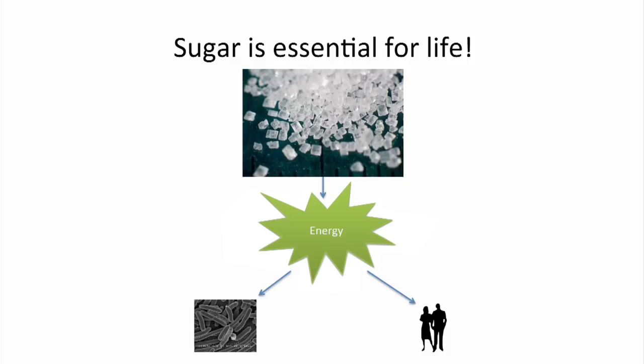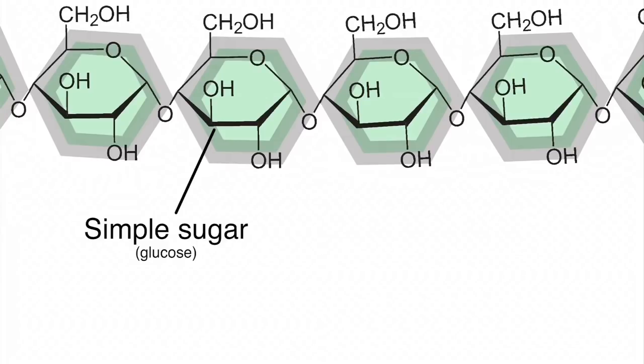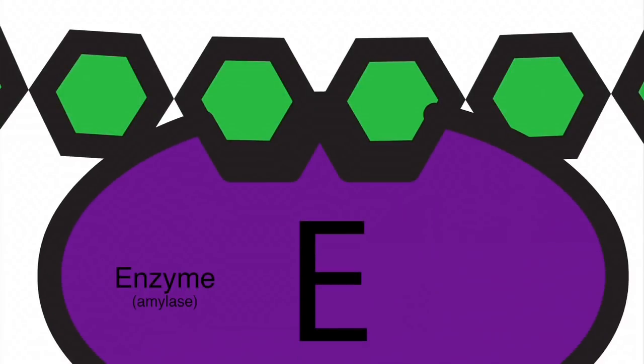Let's take a closer look at how this is done. The starch polymer is made of chains of simple sugar monomers called glucose. The bonds that connect them are called glycosidic bonds. An enzyme called amylase helps break the sugars apart from each other by fitting between two monomers. A water molecule is absorbed in order to break the glycosidic bond between two monomers in a process called hydrolysis.